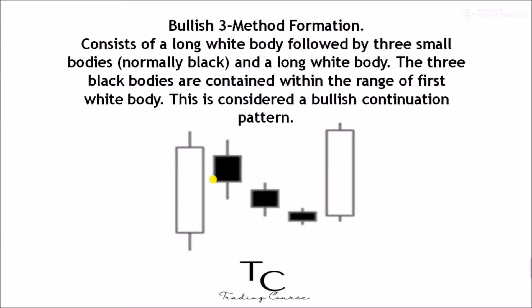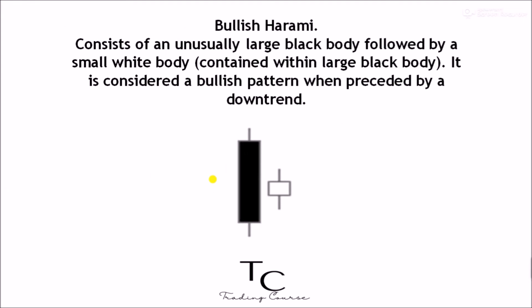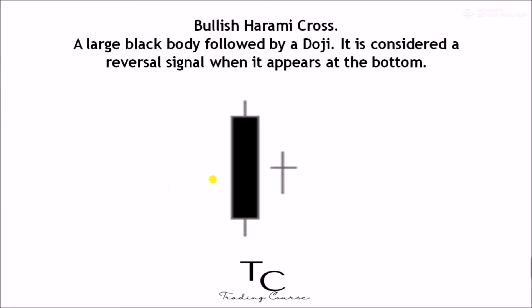Bullish three method formation — consists of a long white body followed by three small bodies, normally black, and a long white body. The three black bodies are contained within the range of the first white body. This is considered a bullish continuation pattern. Bullish harami — consists of an unusually large black body followed by a small white body contained within the large black body; considered a bullish pattern when preceded by a downtrend. Bullish harami cross — a large black body followed by a doji; considered a reversal signal when it appears at the bottom.